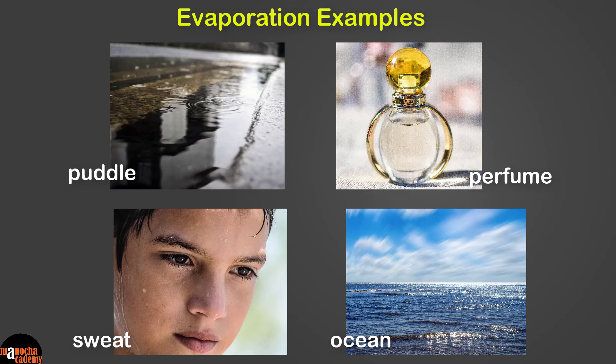We know that a perfume bottle should be closed tightly, because if it is left open for a long time, the perfume will disappear. Since perfume evaporates quickly, the liquid perfume changes to perfume vapors. The sweat from our body evaporates and helps to cool down our body. The water evaporates from the seas and oceans, and this water vapor rises up and forms clouds and comes down later as rain or snow. So the water cycle works with the help of evaporation.